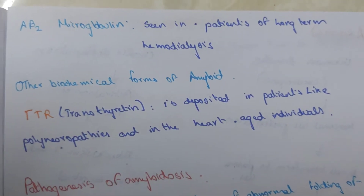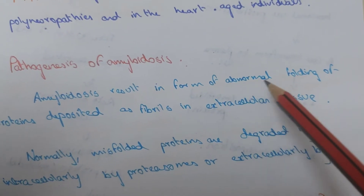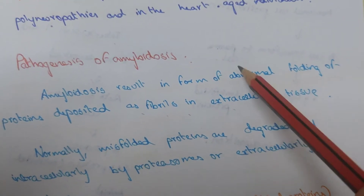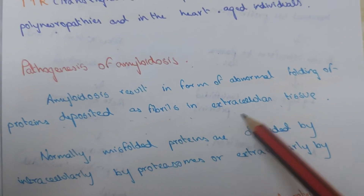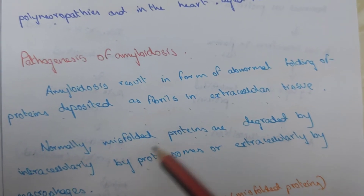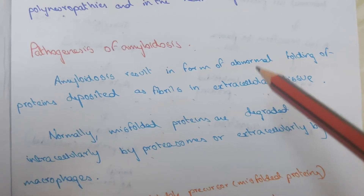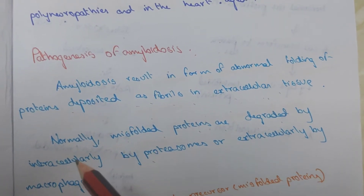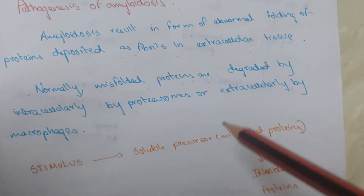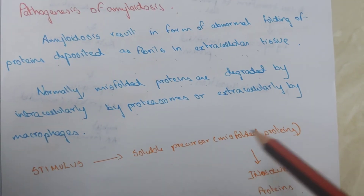Now we are going to see the pathogenesis of amyloid. Amyloid results from abnormal folding of proteins deposited as fibrils in extracellular tissue. Normally, misfolded proteins are degraded intracellularly by proteasomes or extracellularly by macrophages. In the pathway of pathogenesis, a stimulus leads to formation of soluble misfolded proteins, which are then changed into insoluble proteins.